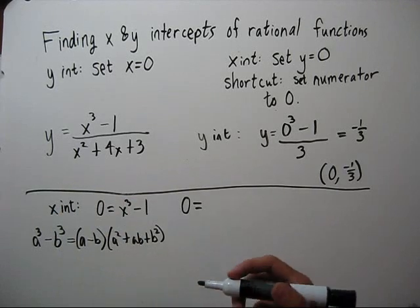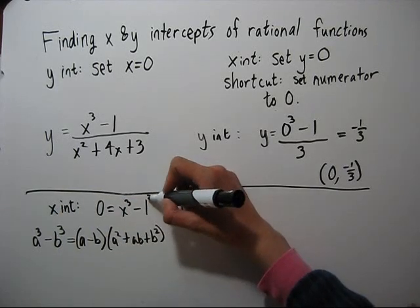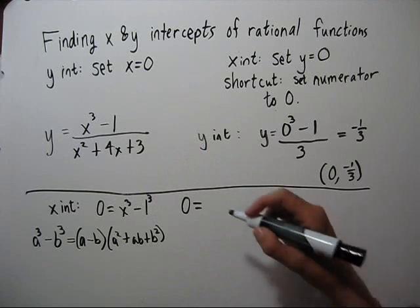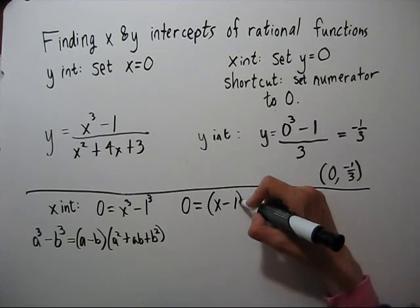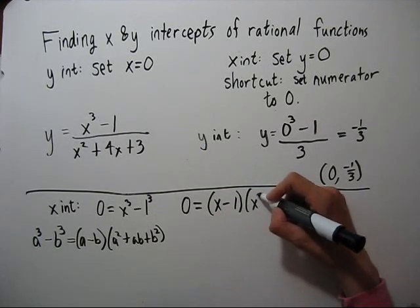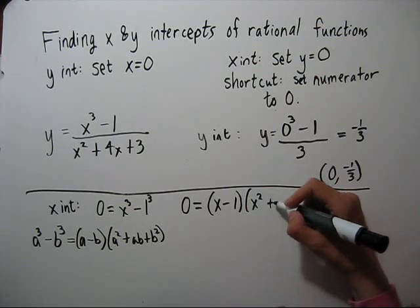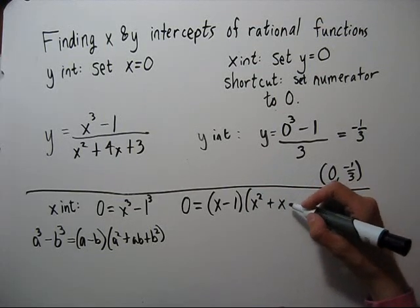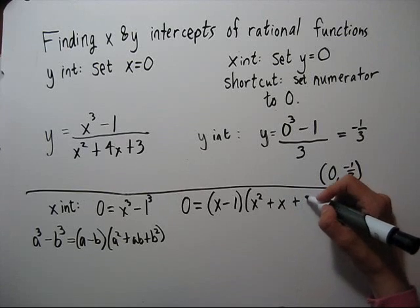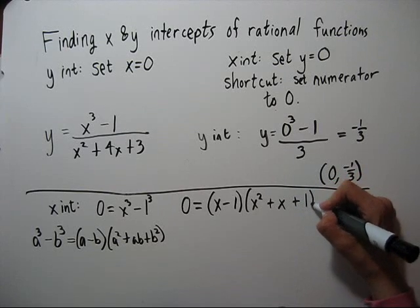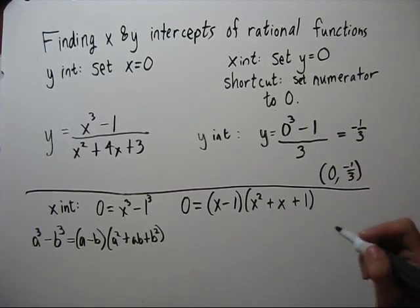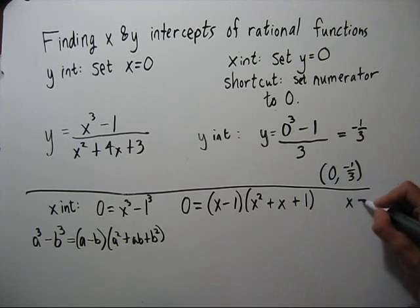Here we have x cubed. This one is the same as one cubed. So we're going to have x minus one times x squared plus one times x, which is just x, and then plus one squared which is one. So we know that x equals one is one solution.